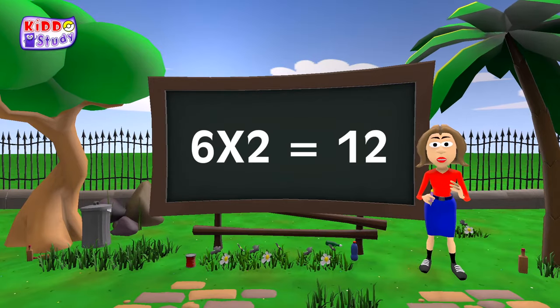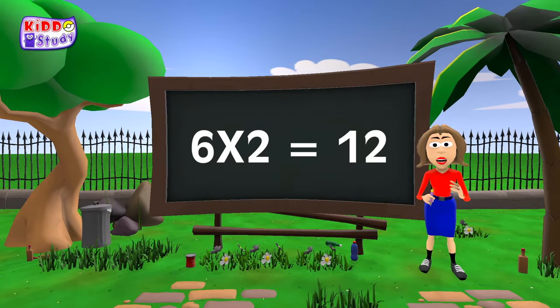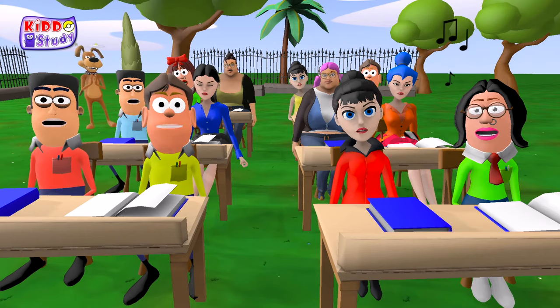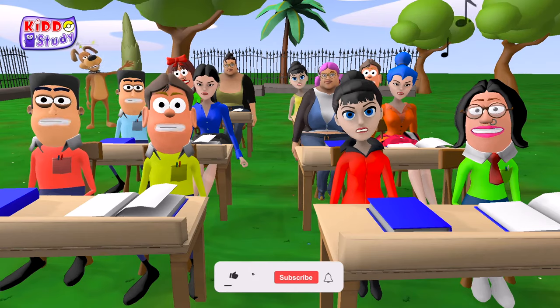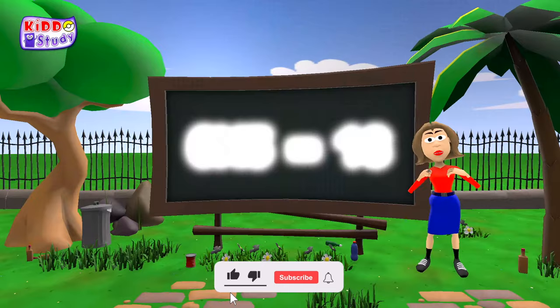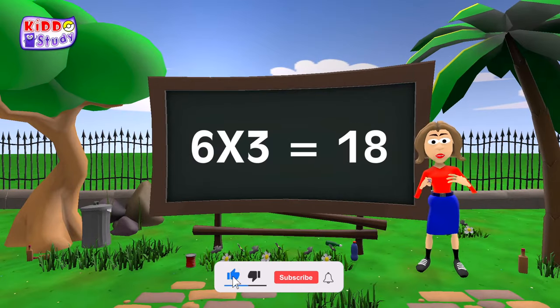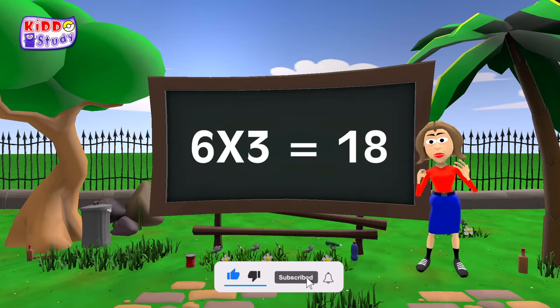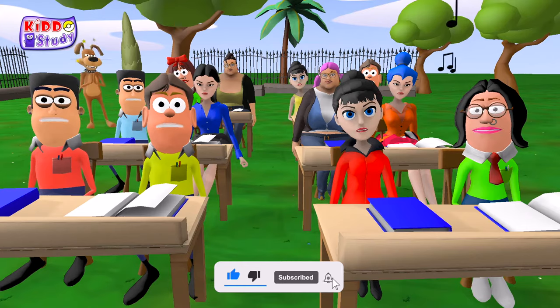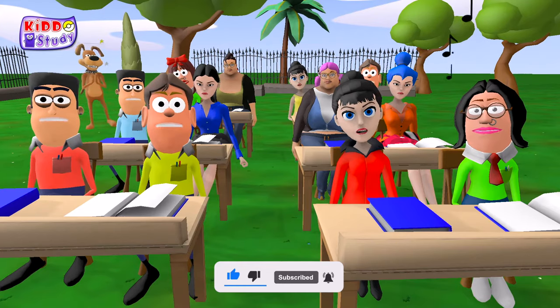Six twos are twelve. Six twos are twelve. Six threes are eighteen. Six threes are eighteen.